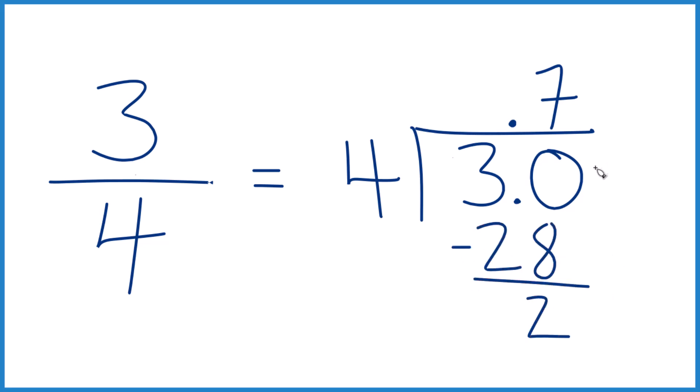You can still call this 3.00 because it's still equal to 3, we haven't changed the value. Then bring down here, as long as we move over one decimal place.